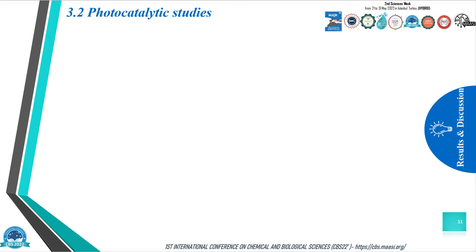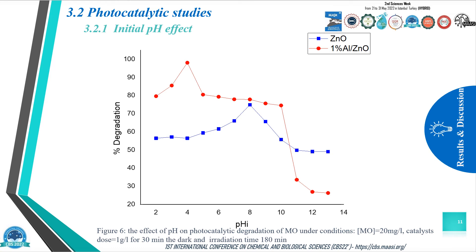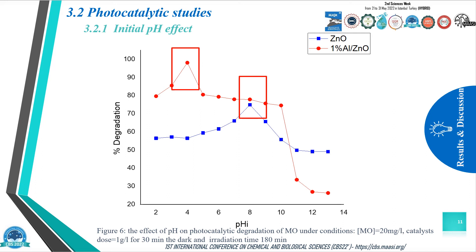Photocatalytic studies. We start with the initial pH effect. pH is a key parameter in photocatalytic investigation since it regulates the reaction and the formation of hydroxyl radicals. The initial pH was investigated between 2 and 13 under the conditions of 20 milligrams per liter as dye concentration, 1 gram per liter as catalyst dose, 30 minutes in the dark, and 180 minutes under UV lamp irradiation. The photocatalytic degradation reached its maximum at pH 8 for zinc oxide with 47.8%, and at pH 4 for aluminum-doped zinc oxide at 98.1%.